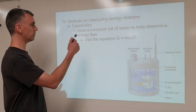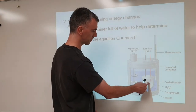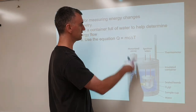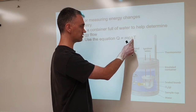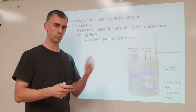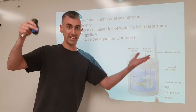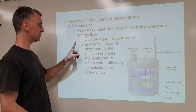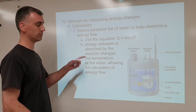The way it works: Q equals mc delta T. If the food burns in here, it releases the energy into this water. So we can take the mass of the water, the specific heat of the water, and how much the water's temperature changed, and get the energy absorbed by the water. Since the energy absorbed by the water equals the energy lost when you burn the food, now you know how many calories are in it. Energy released by the reaction changes the temperature of the water, allowing calculation of energy flow.